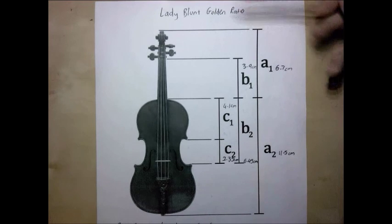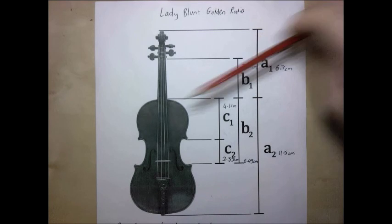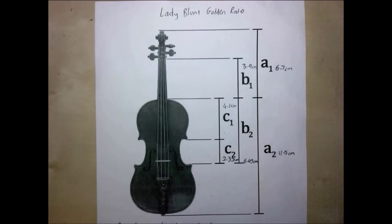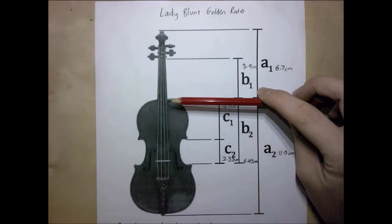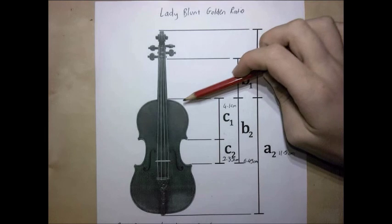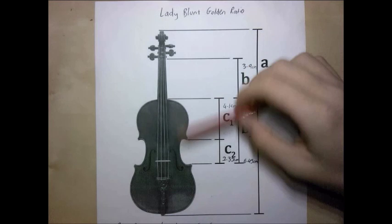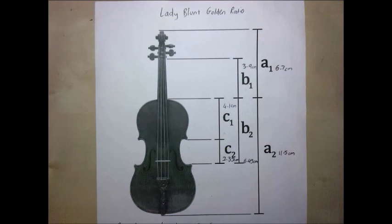It was found that from the tip of the scroll to the start of the neck, it was 6.7cm, while from the start of the neck to the end pin was 11.5cm. The nut to the start of the neck was 3.9cm, while the start of the neck to the start of the middle bout is 6.5cm.